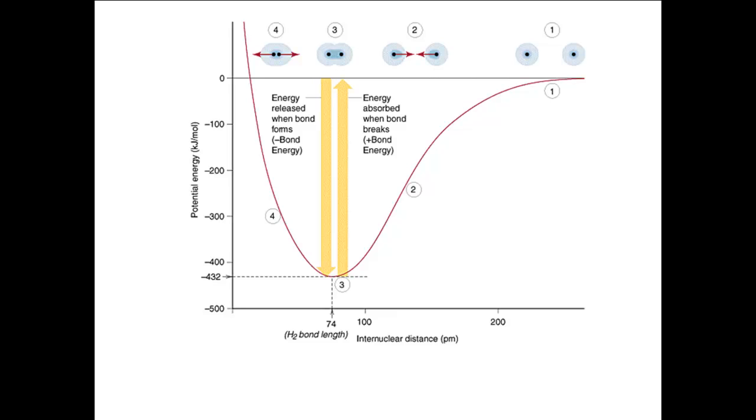But to pull the two nuclei apart also requires energy. So the two nuclei sit at a certain distance apart, which is where they have the minimum energy. For hydrogen, this happens to be at a distance of 74 picometers, or 0.74 angstroms. This is called the bond length for the hydrogen molecule. The energy released when the two atoms come together, 432 kilojoules per mole, is called the bond energy. This is also the energy needed to break the bond.